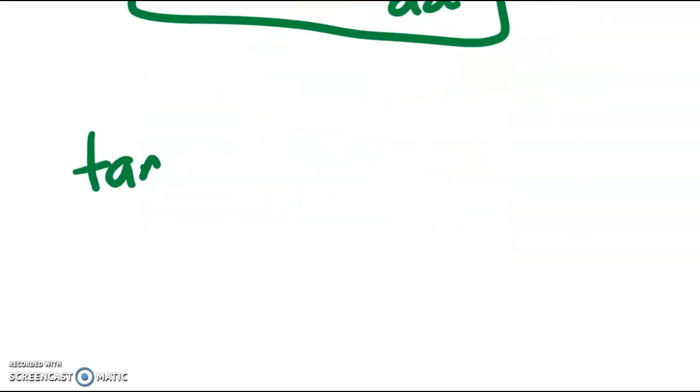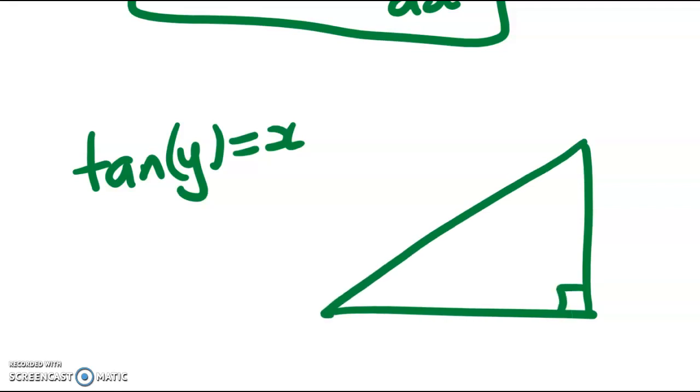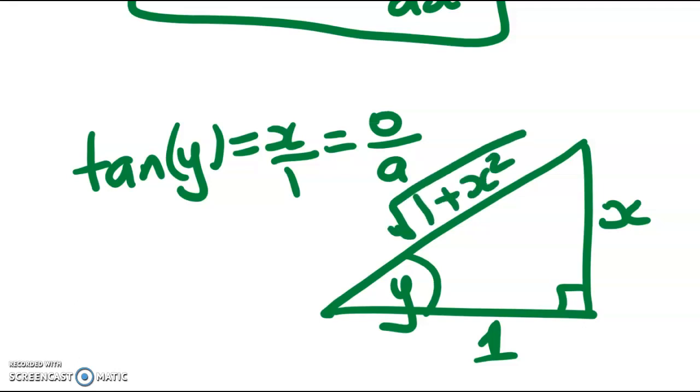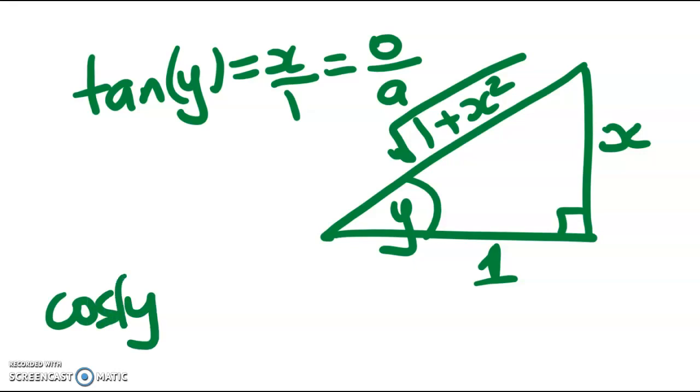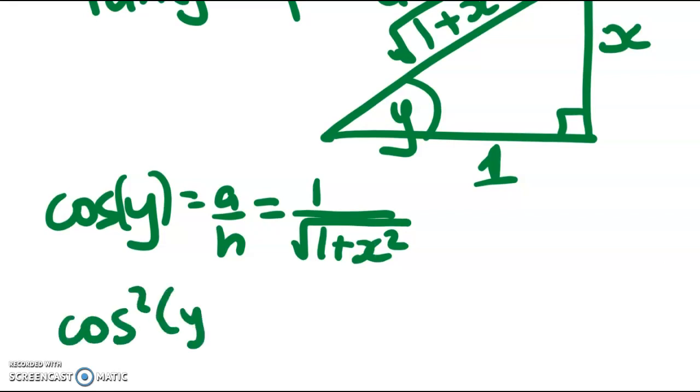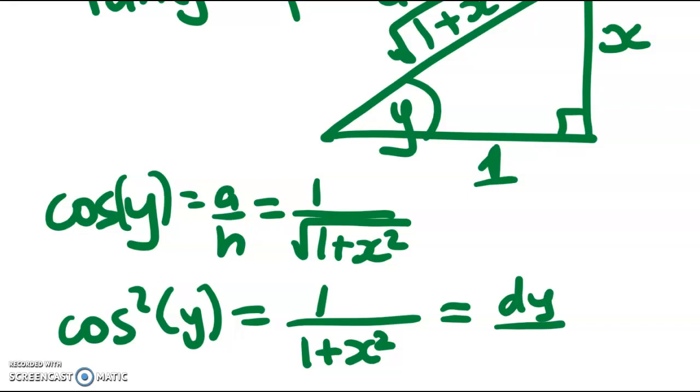We know that tan y is equal to x. That was my starting point. So we can draw a right angle triangle. That's my angle y and we can think of x as x over 1. That's the opposite over the adjacent. So the opposite side is x long and the adjacent side is 1 long. And that means that this side must be by Pythagoras the square root of 1 plus x² units long. So we're going to use that because we need to find cos of y. But that's now a very easy problem. So cos of y is equal to a over h which is 1 over root 1 plus x². So cos² of y is equal to 1 over 1 plus x². So that's what dy/dx is.